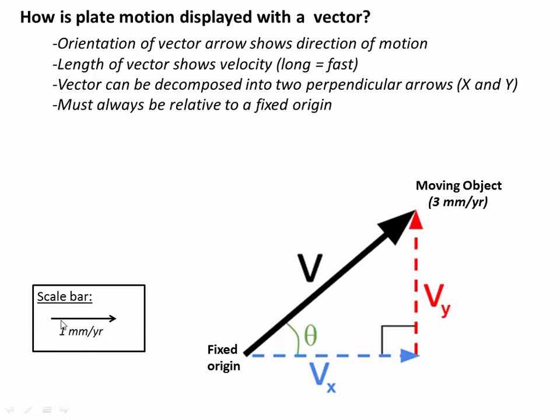And usually there's a scale that helps us figure that out. In this example, an arrow of this length is equivalent to a velocity of one millimeter per year. So if we scale that over here, this longer arrow is roughly three of these, so we know that this longer arrow represents about three millimeters per year of velocity and the object is moving in the direction specified by this angle. We're going to see at the end of this video that a vector of any given orientation and length can be decomposed into two perpendicular vectors, usually along an x and a y axis, or along an east and a north axis.